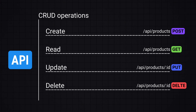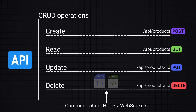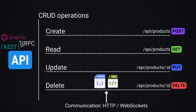Another part is to decide on the communication protocol that will be used, like HTTP, WebSockets, or other protocols, and the data transport mechanism, which can be JSON, XML, or protocol buffers. This is usually the case for RESTful APIs, but we also have GraphQL and gRPC paradigms.